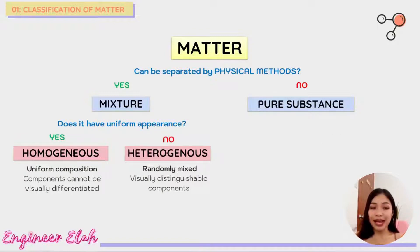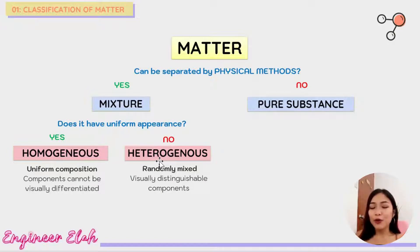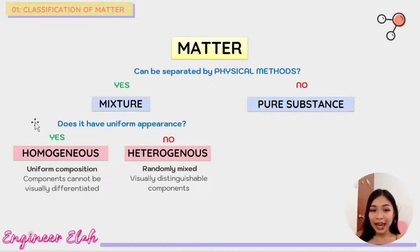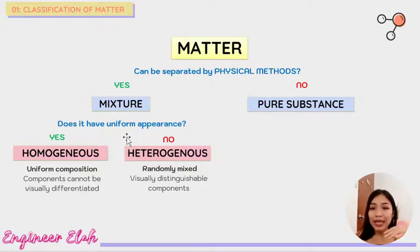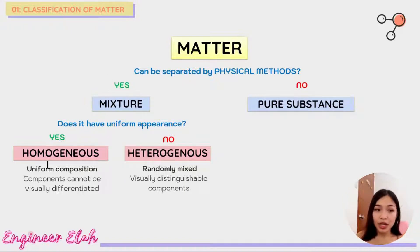Mixtures can further be classified into homogeneous and heterogeneous. Now that we've classified our matter as a mixture, we ask ourselves another question: does it have uniform appearance? This means that when you look at the mixture from top to bottom, the appearance is the same throughout. If yes, it is a homogeneous mixture; if no, it is a heterogeneous mixture.